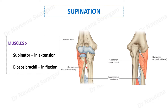The supinator gets inserted onto the upper part of the lateral surface of the shaft of the radius. When the muscle contracts, it causes lateral rotation of the upper end of the radius. It is a powerful supinator in the extended elbow.